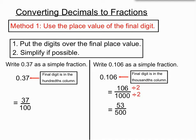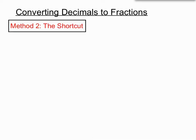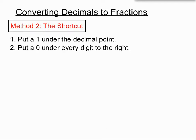So we used the final digit's place value to create the bottom of our fraction in each case. That's a bit tricky because we have to know which column is which. So I've got a bit of a shortcut for you for method 2. The shortcut is we put a 1 under the decimal point, we then put a 0 under every digit to the right of that.